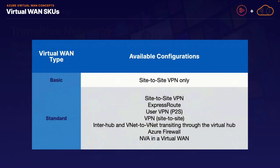Finishing up this initial conceptual overview, let's talk about SKUs. When discussing Virtual WAN, we have two SKUs: basic and standard. The basic SKU is fairly stripped down — the only features it has are creating hybrid site-to-site VPN connections and connecting multiple virtual networks. That's really about it. By comparison, the standard SKU has a lot more built into it: site-to-site VPN, point-to-site VPN, ExpressRoute, virtual network connections, transitive networking through any virtual hub, and the ability to directly deploy the Azure Firewall service and third-party network virtual appliances into your managed hubs.